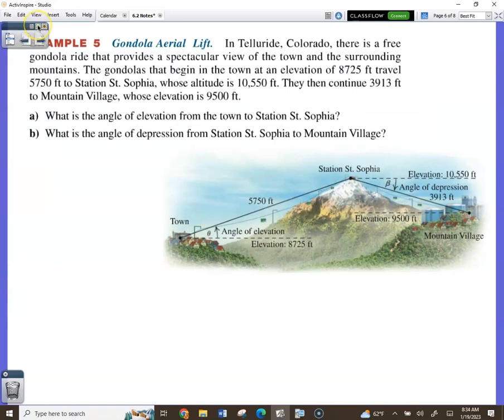We have a word problem. We have a picture drawn for us. So we don't have to do that part. Do you know what a gondola is? Or a ski lift? Or like the, what's the thing in Chattanooga that goes up the side of the mountain? The incline. So in Colorado, there's a free-gondola ride that provides a spectacular view of the town. The gondolas that begin in the town at an elevation of 8,725 feet travel 5,750 feet to Station St. Sophia. Its altitude is 10,550 feet. Then they continue 3,900 feet to Mountain Village with elevation 9,500 feet. What's the angle of elevation from the town? Okay.